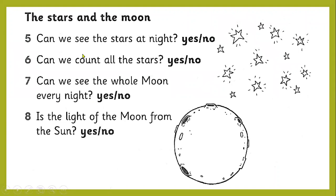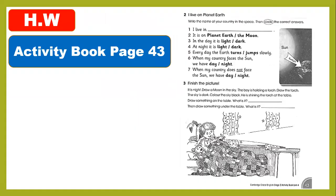We talked about the stars and moon. Can we see the stars at night? Yes. Can we count all the stars? No. Can we see the whole moon every night — the whole round shape? No. Is the light of the moon from the sun? Yes, because the moon does not have any light. The moon is a black rock. The sun shines on the moon, and then the moon shines. So the light comes from the sun onto the moon.